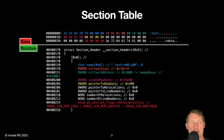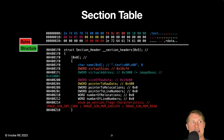The section table contains all required information to load sections into memory, with section headers for each of the program's sections. This includes the name of the section, which typically abides by a standard naming convention; however, section names have no effect on the operation of the program. Other members include the size of the section once mapped into memory, the raw size of the section as it resides on disk, and the section flags representing characteristics about the section. For example, the .text section's in-memory permissions are readable and executable due to the IMAGE_SCN_MEM_READ, IMAGE_SCN_MEM_EXECUTE, and IMAGE_SCN_CNT_CODE flags, which distinguish that the section has executable code.